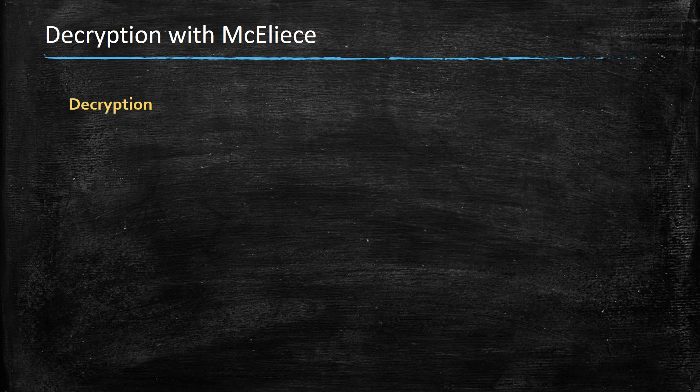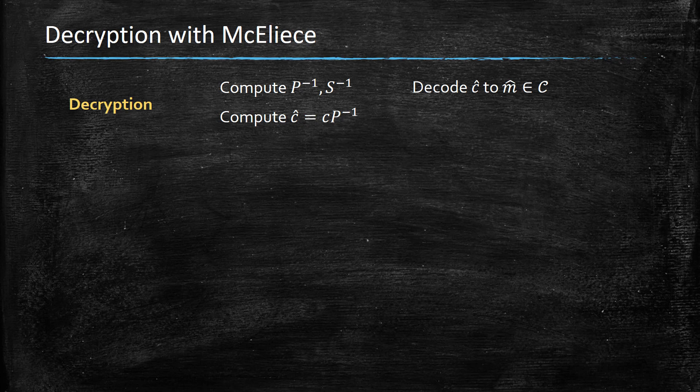Let's see how we can decrypt with the McEliece cryptosystem. Because we know P and S, we are capable of calculating the inverses P-inverse and S-inverse. We compute C-hat which is C times P-inverse, then decode it to M-hat, a codeword, and then multiply M-hat by S-inverse to retrieve the message. Let's see why this decryption procedure works.